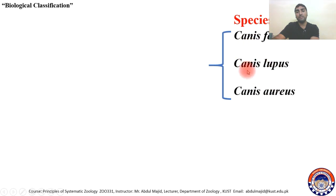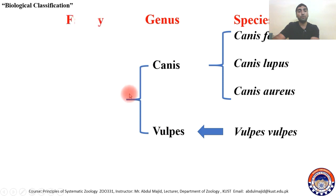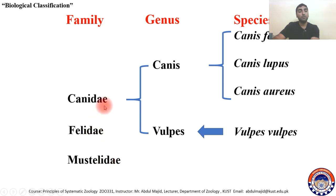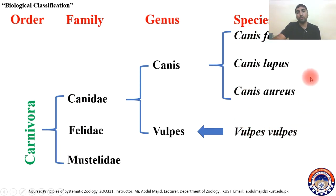For example, we have species Canis familiaris (the common dog), Canis lupus (the wolf), and Canis aureus (the common jackal) — all grouped into genus Canis because they are dog-like animals. Canis and Vulpes both have canine teeth, so they are subordinated to family Canidae. Another family is Felidae and another is Mustelidae. All three families share a common characteristic — they are all carnivore animals — so they are grouped into order Carnivora. Lower categories are thus subordinated to higher ones.